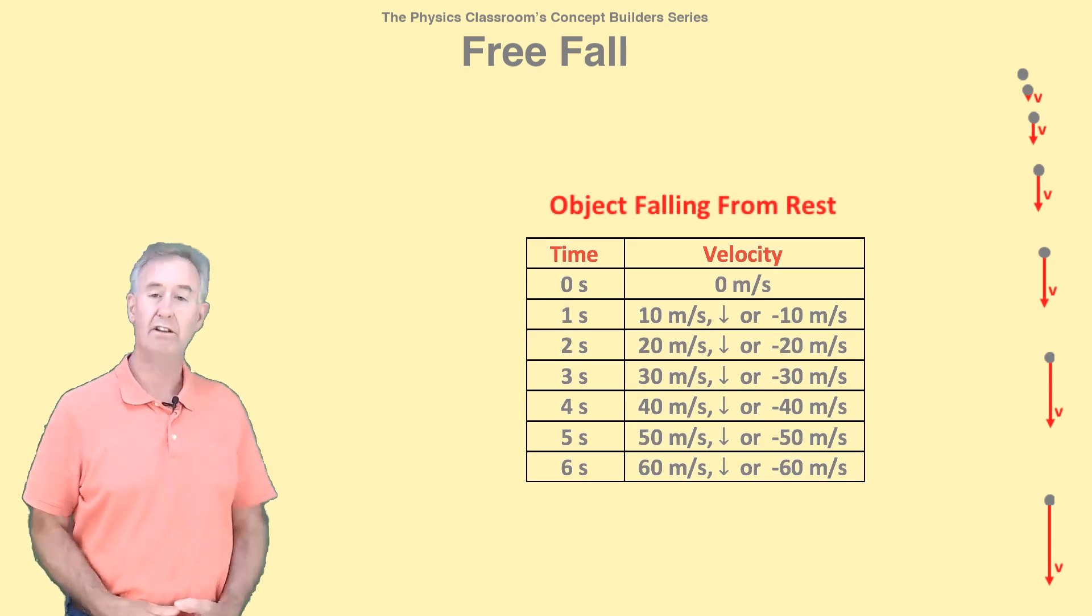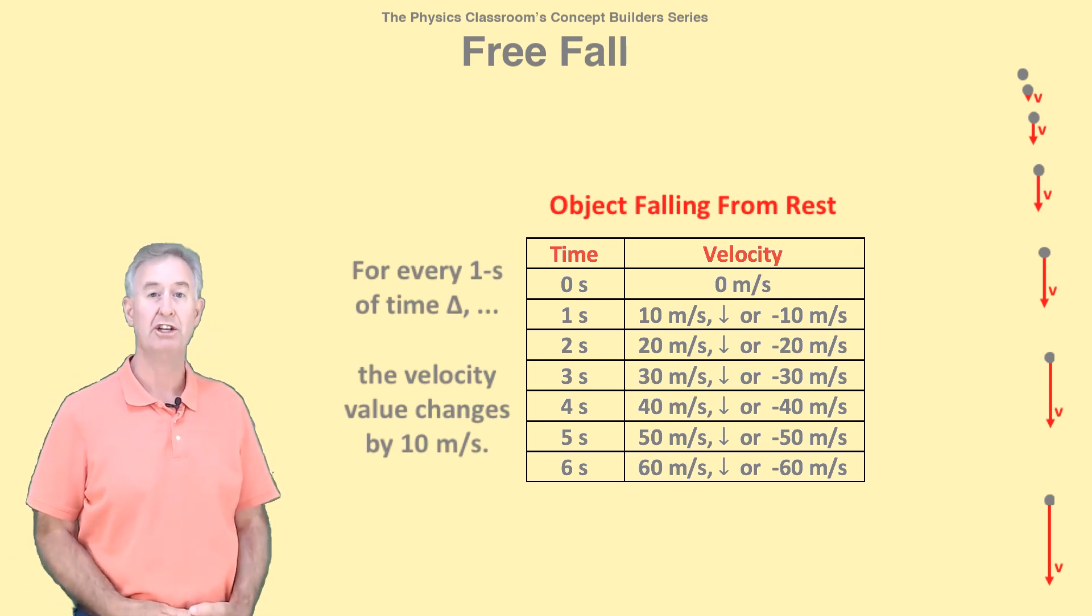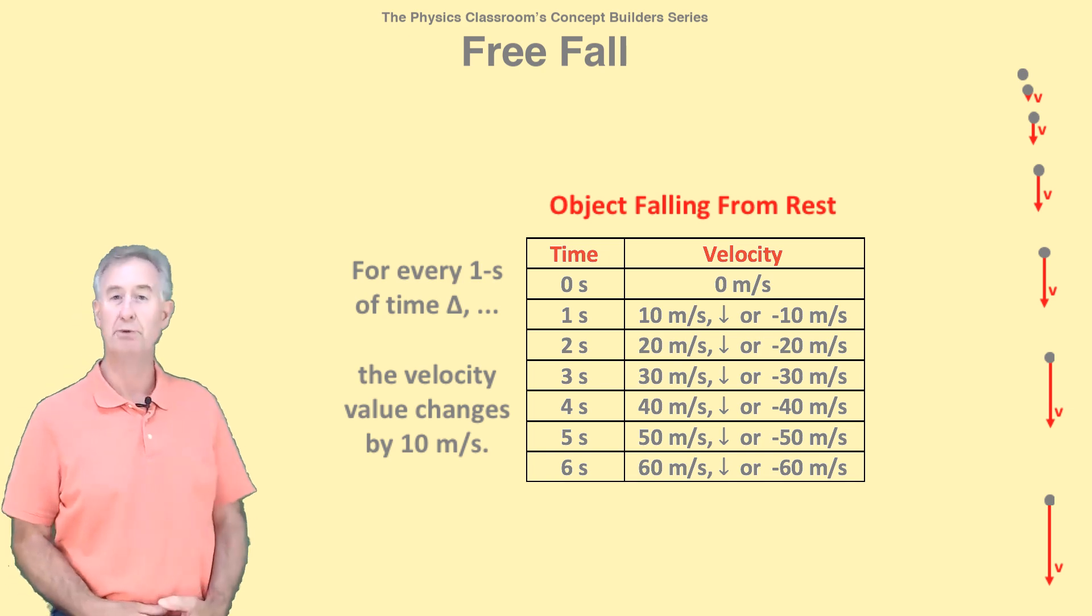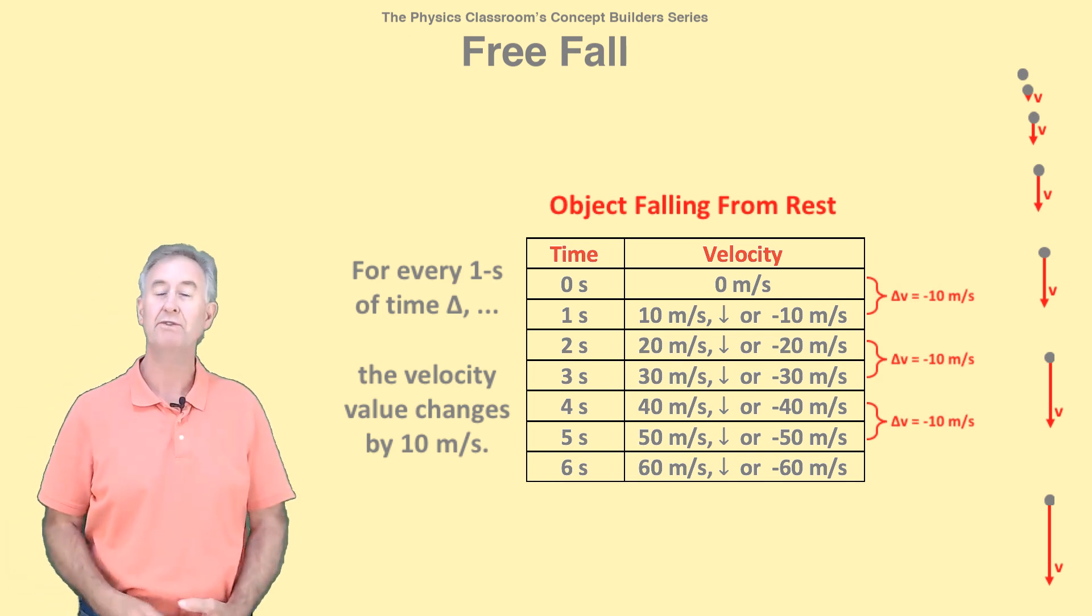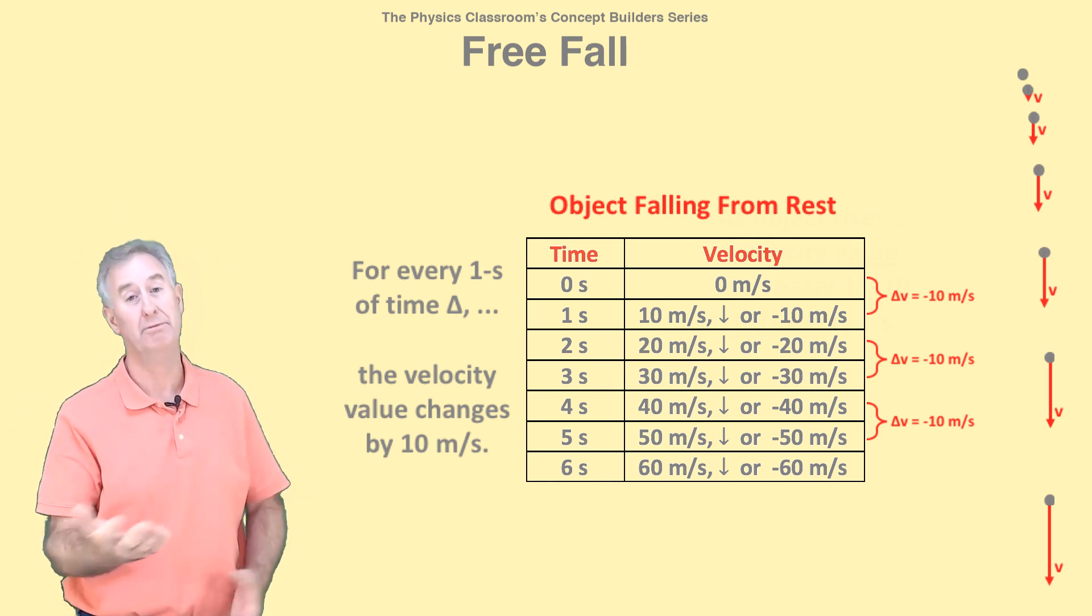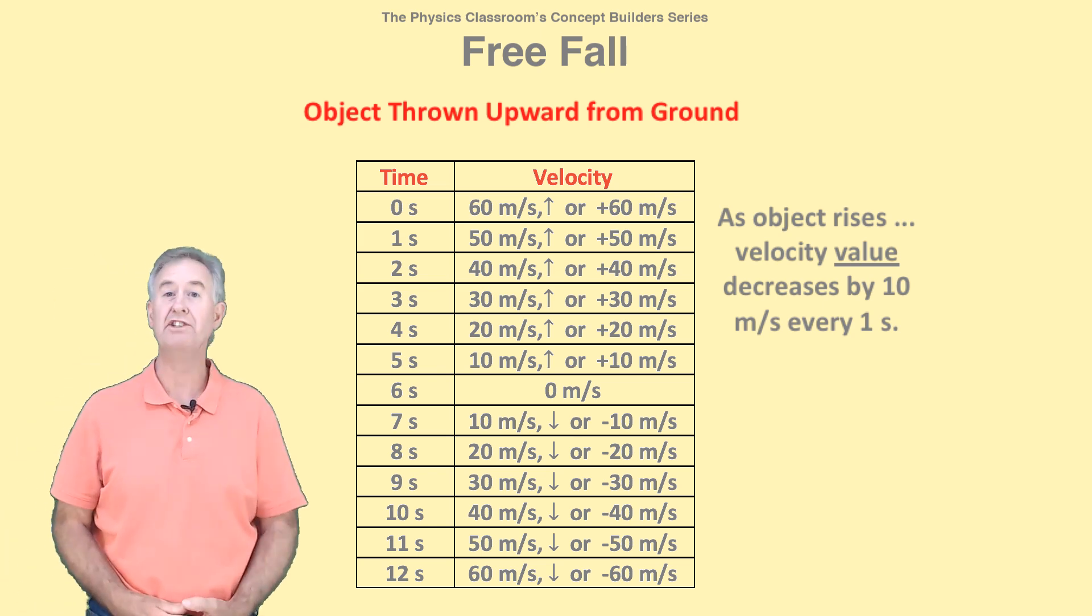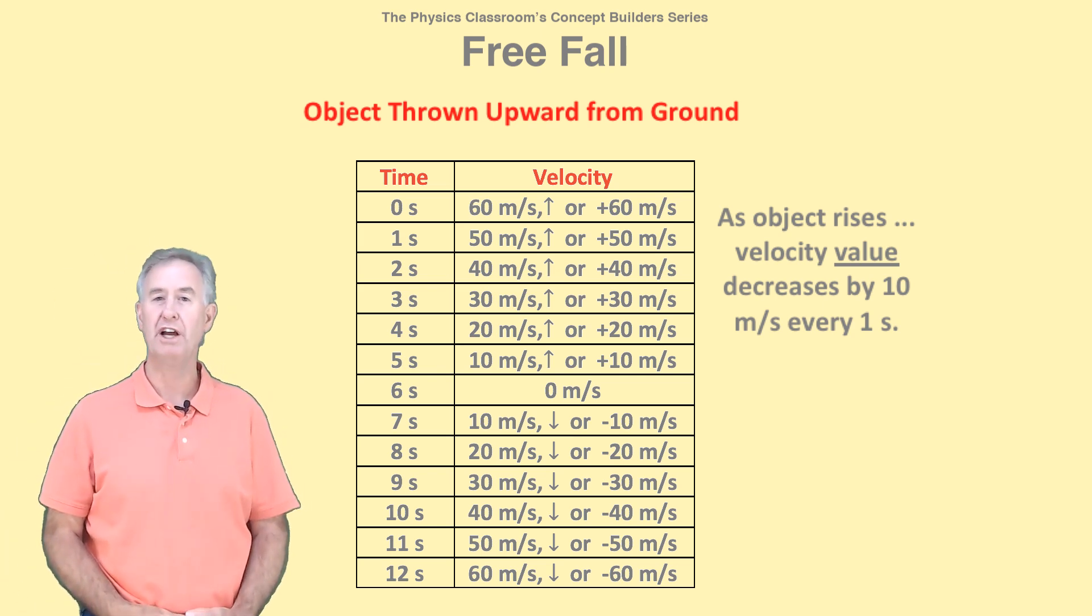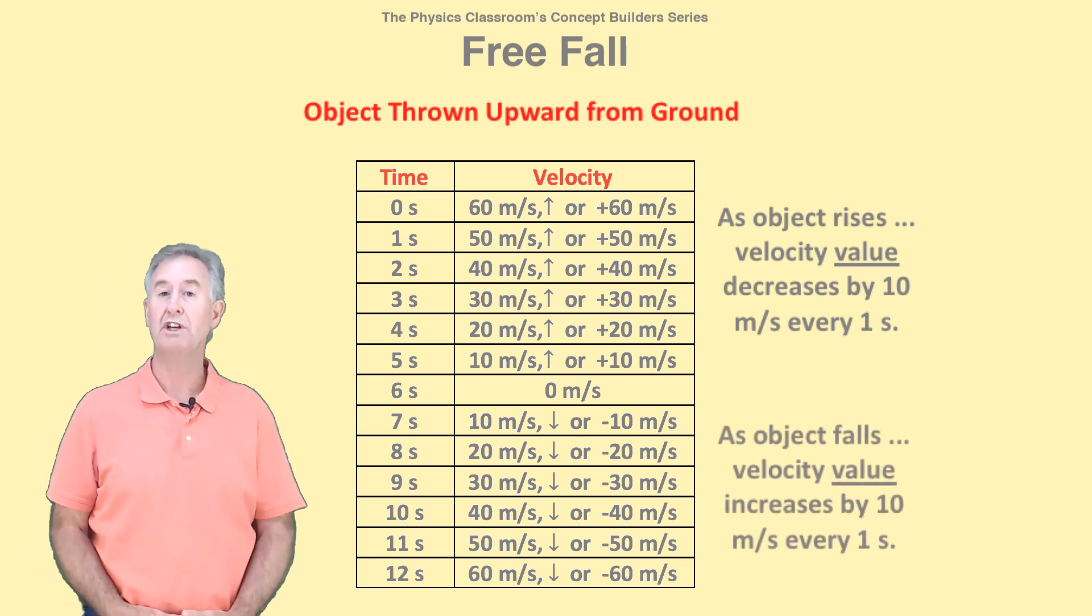This table shows how the velocity changes over the course of time. For every one second of time change, the velocity changes by negative 10 meters per second. This table is for an object dropped from rest. What happens if the object is thrown upwards from the ground? An upward thrown object decreases its velocity value by 10 meters per second each second. As it falls, velocity values increase by 10 meters per second each second.